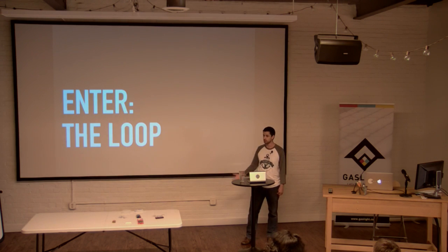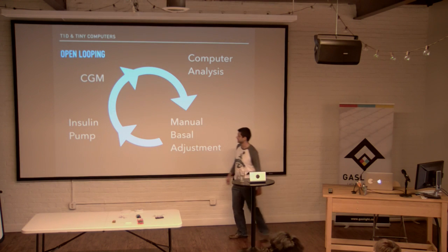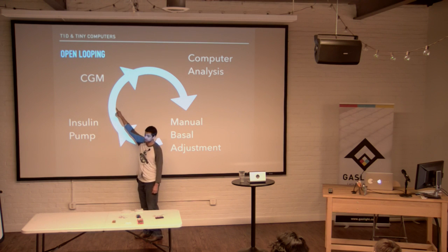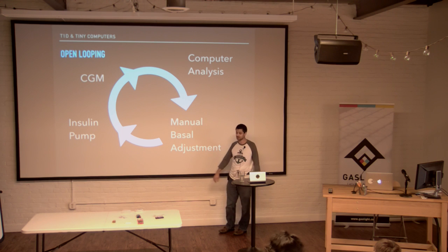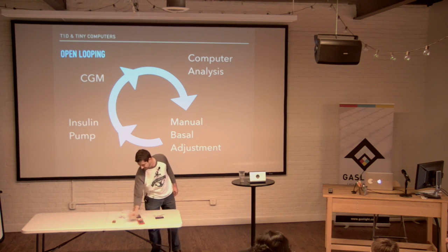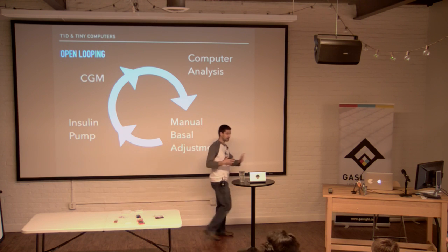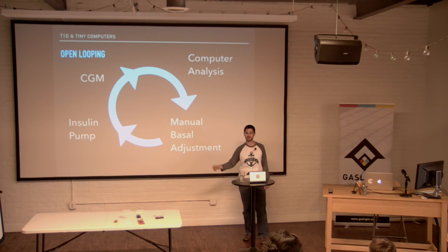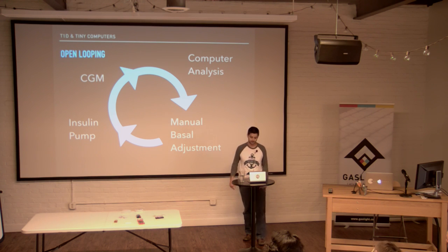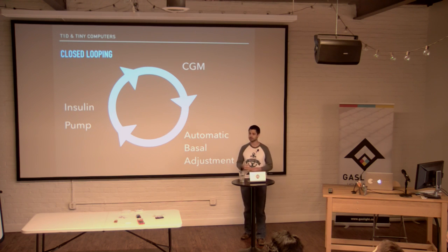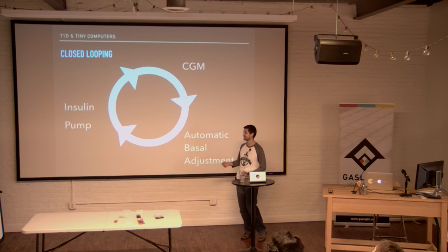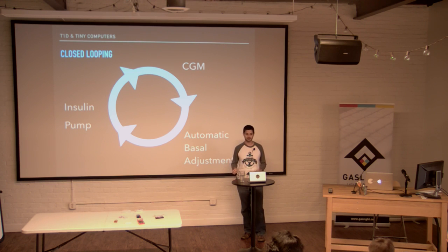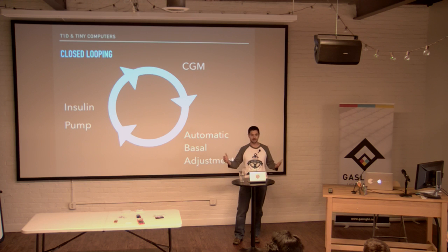Looping is basically this: when you're open looping, you're taking the insulin going into your body and measuring what it's doing to your blood glucose. You're probably sending it to a computer — a tiny computer like a Raspberry Pi or an Edison — analyzing what's happened over the last 30 minutes or so and projecting out what might happen over the next 30 minutes. You're doing the safest thing to get the patient into a good blood glucose range. That's only with the basal rate, not with bolusing. All the safe approaches not yet FDA-approved are using the basal rate — adjusting small rates like one or two units per hour, not big single shots.